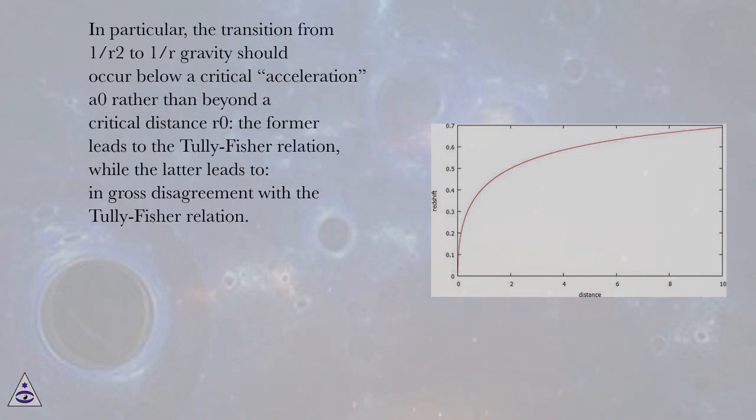In particular, the transition from 1/R² to 1/R gravity should occur below a critical acceleration A0 rather than beyond a critical distance R0. The former leads to the Tully-Fisher relation, while the latter leads to gross disagreement with the Tully-Fisher relation.